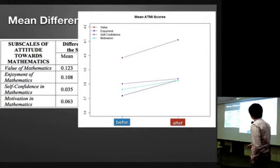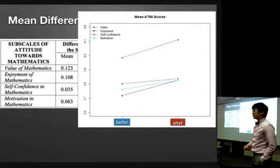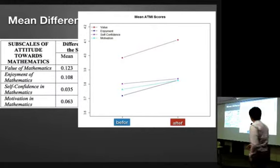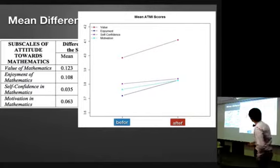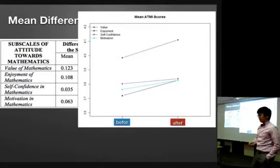So, you can see that the mean difference for the value, enjoyment, self-confidence, and motivation subscales of my students are all above 3.0, which means that there is a positive change of attitude towards mathematics after the flipped classroom model.